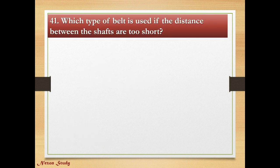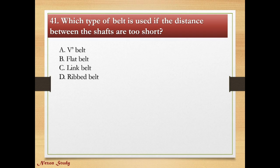Question: Which type of belt is used if the distance between shafts is too short? Options: V belt, flat belt, link belt, rip belt. Right answer is V belt. This is the V belt.